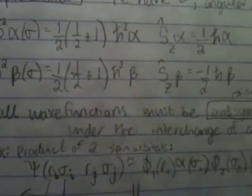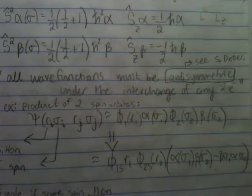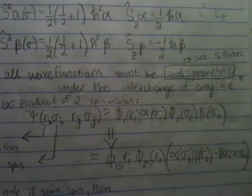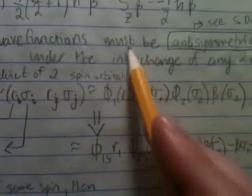Now what's really important from this, the take-home message from this part is that, and pay attention, all wave functions must be anti-symmetric under the interchange of any two electrons. Interchange just means if you do something with them, like multiply them.